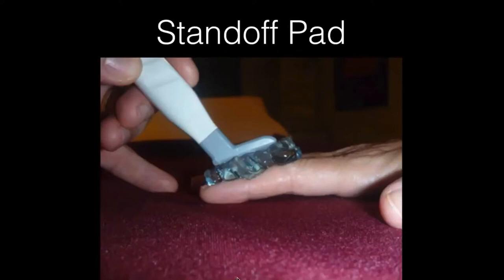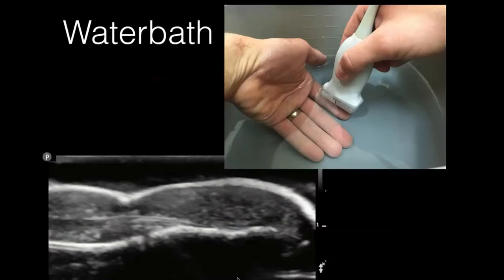Here's an example of a standoff pad, which works really well for abscesses. You can float the transducer over a pile of gel so it's not really putting pressure on the structure but still providing the coupling you need. The other option is a water bath — for things like evaluating a finger, it's easy to put in a water bath. Put it in water; the transducer head is generally watertight, and you can get coupling with just the water. Here's an example of my finger where you can actually see the finger down low in the image.